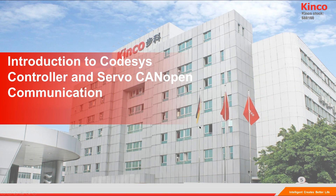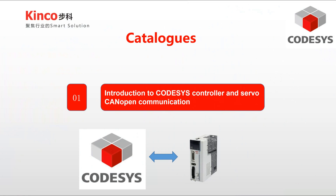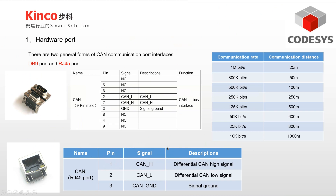Hi everyone. This video will introduce the CANOPEN communication between Kinko Codesys's PLC and Servo. There are two CANOPEN interfaces on the Kinko Servo: a DB9 interface and an integrated RJ45 interface. Communication between servos and PLCs can be established through the standard network cable. Here are the tables of Kinko Servo PIN definition, which you can find in the user manual.